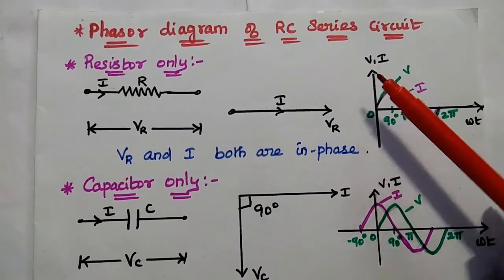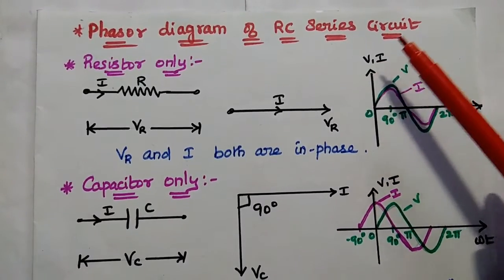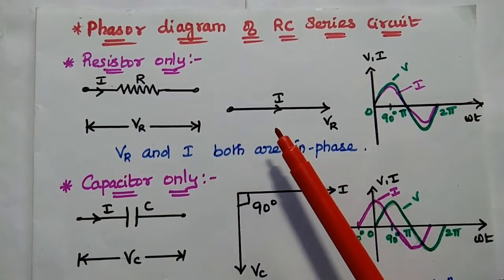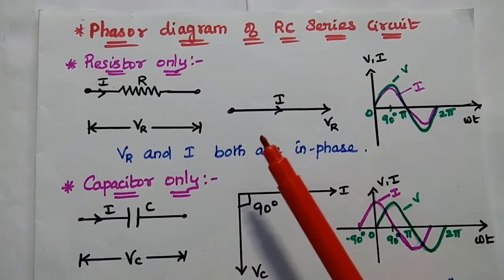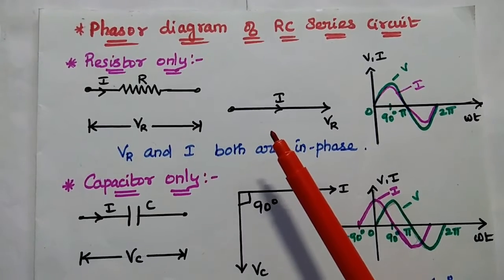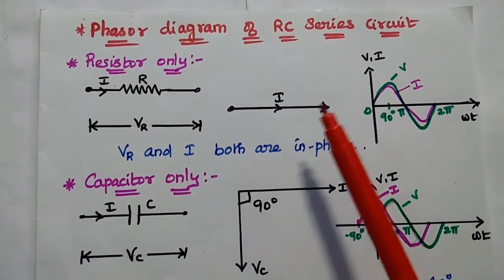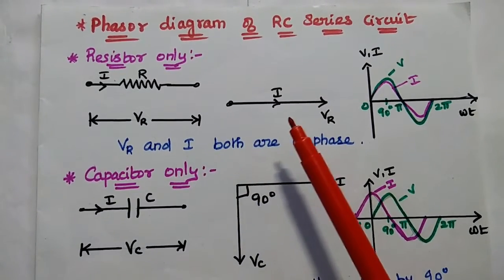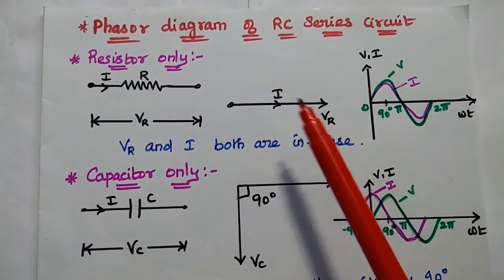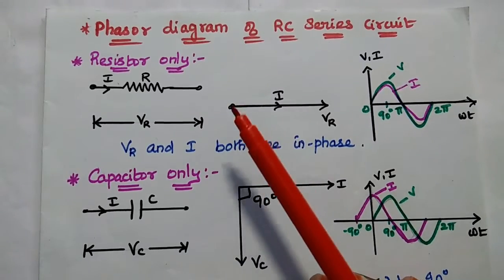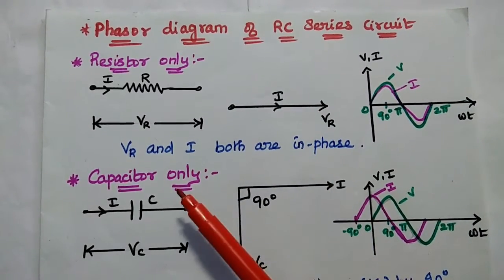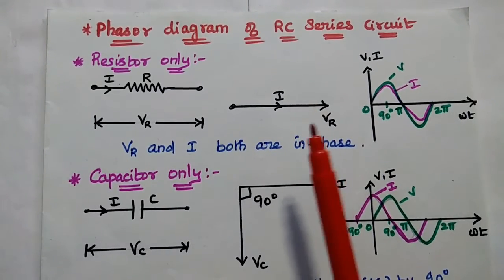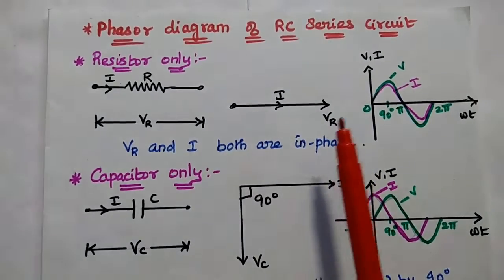Next, we are going to discuss the phasor diagram of the RC series circuit. A phasor diagram is a very important concept in electric circuits because it is a convenient way to represent vector quantities. Here we consider the resistor-only phasor diagram and the capacitor-only phasor diagram, and finally combine them to get the RC series circuit phasor diagram.